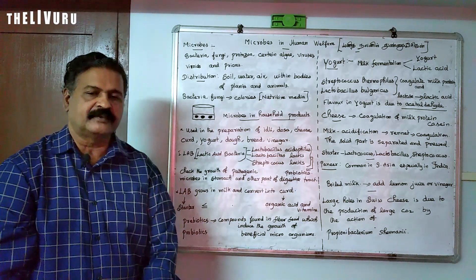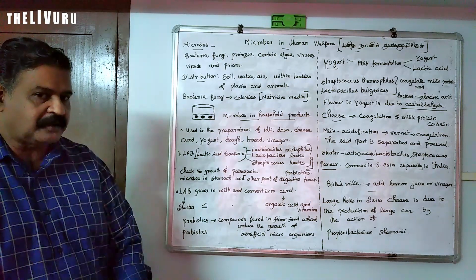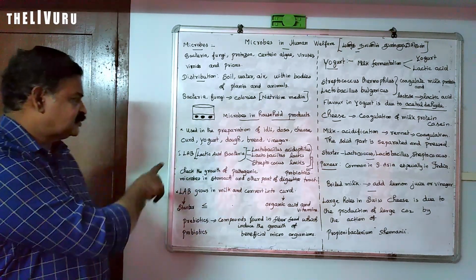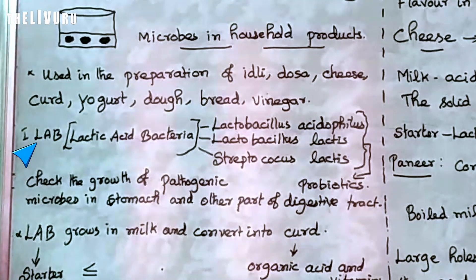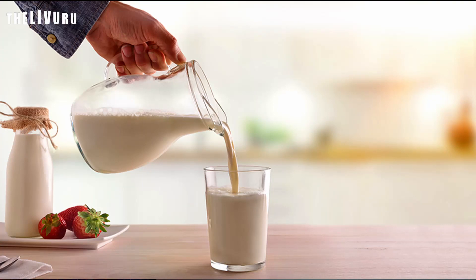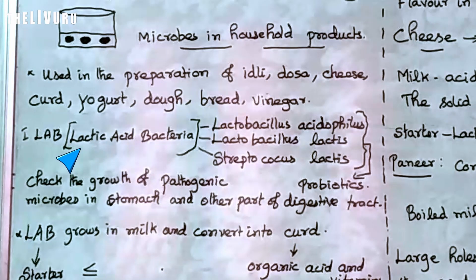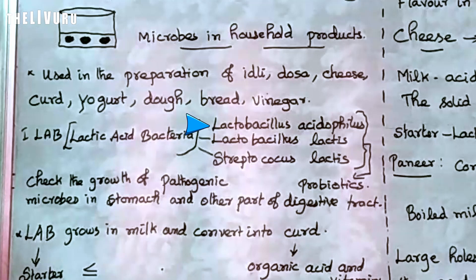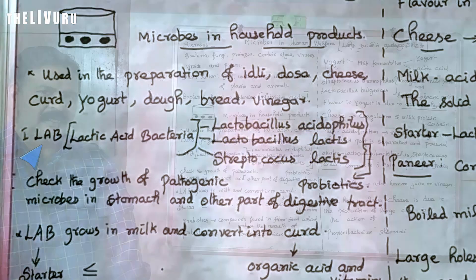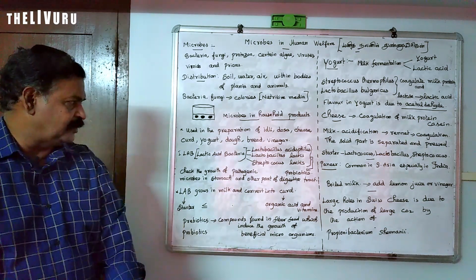The first one is LAB — Lactic Acid Bacteria. Lactic means milk, and these bacteria produce lactic acid. Collectively they are called Lactic Acid Bacteria, otherwise called LAB. That is three bacteria: Lactobacillus acidophilus, Lactobacillus lactis, and Streptococcus lactis. These three are collectively called LAB. A question may be asked: mention the name of LAB or Lactic Acid Bacteria — these three are the answer.